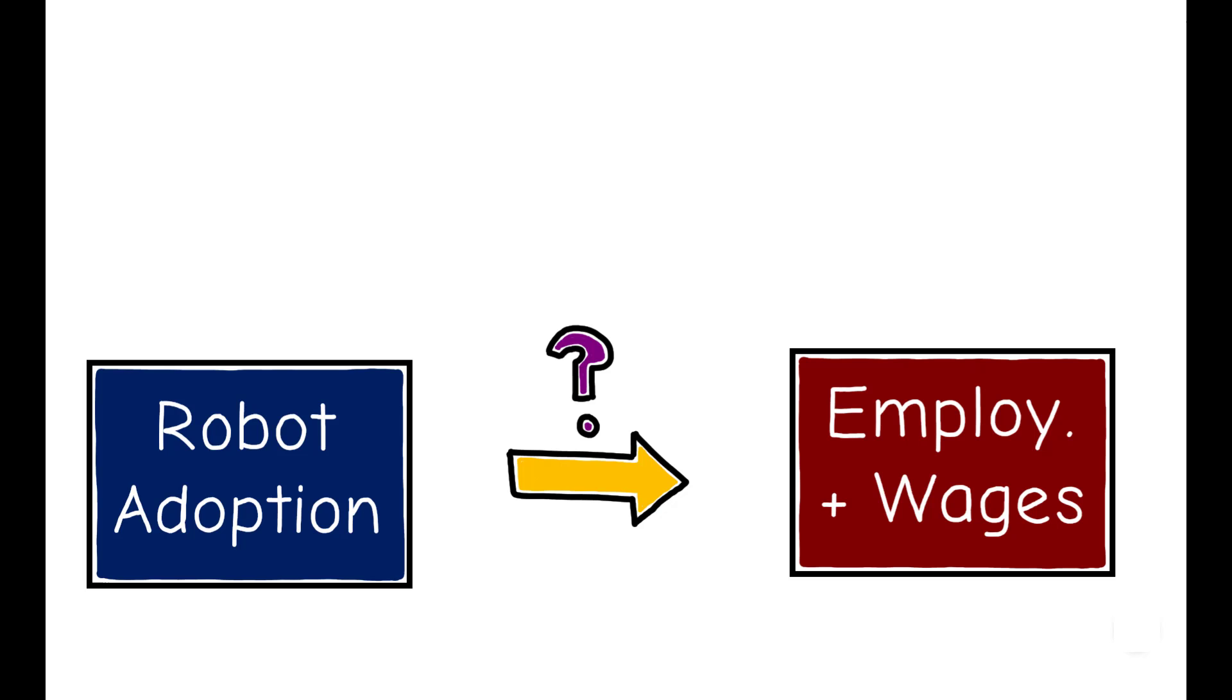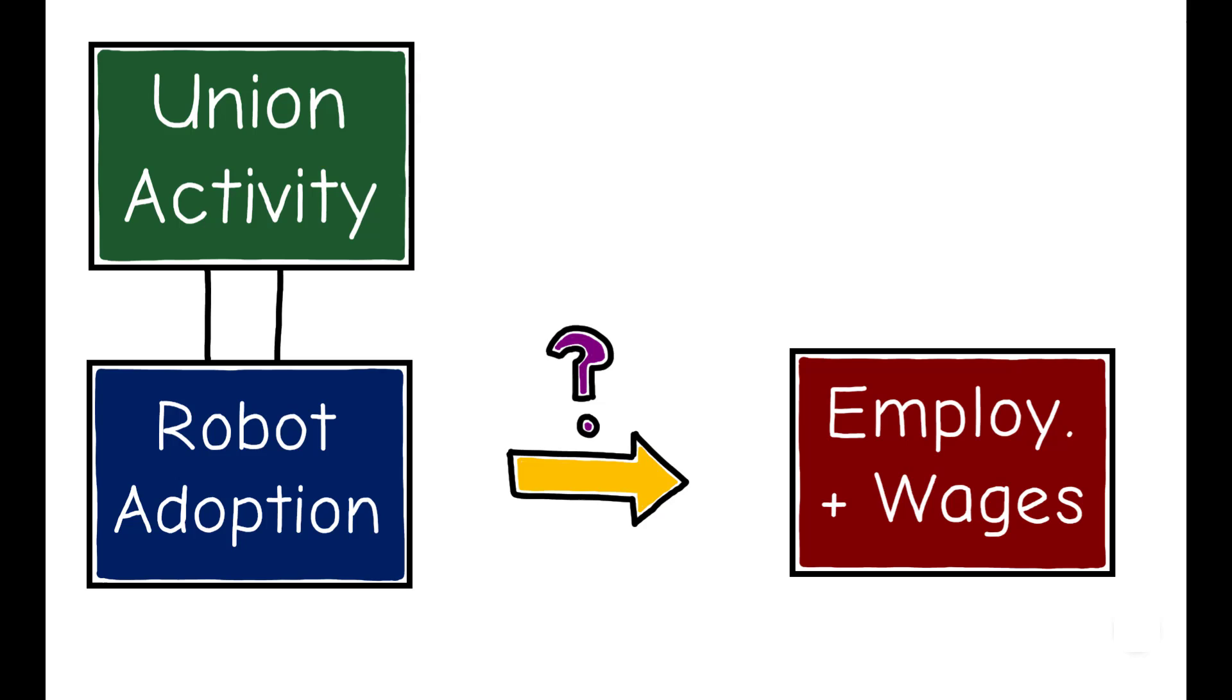A major obstacle in answering this question is that the prevalence of robots in a given market is tightly linked to other factors, such as actions by labor unions, that also affect employment and wages. So how do we isolate the channel we're interested in from these other effects?